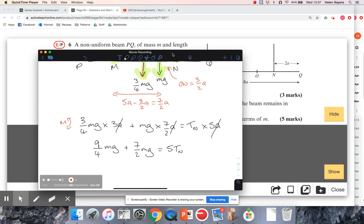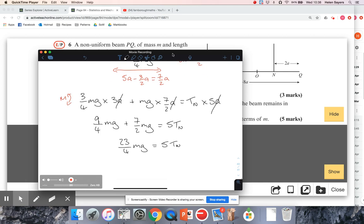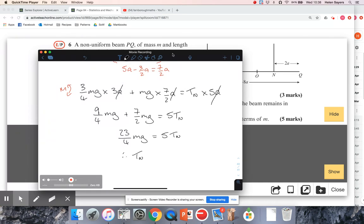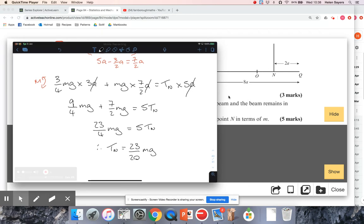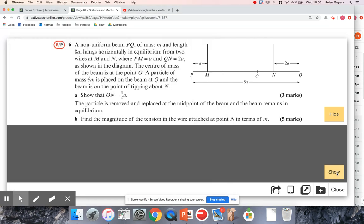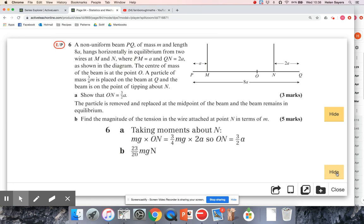So hopefully, divide that by 5, the tension in N is 23 over 20 Mg. It said leave our answer in terms of M, didn't say you have to leave it in terms of G, but if we're leaving it in terms of M, we might as well leave it in terms of G as well. Let's put in units just in case. Let's keep our fingers crossed, is that what we got? Yes, we did, brilliant.